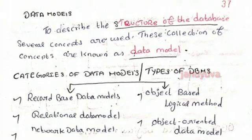The data identity and categories — the data models describe the structure of a database using several concepts and collections. There are two types of data models: record-based and object-based.